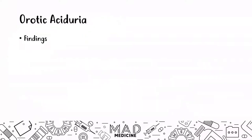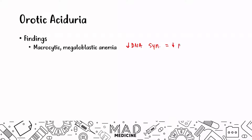When it comes to the findings, you're going to see macrocytic megaloblastic anemia. Why megaloblastic? Because you have decreased DNA synthesis, and that is because you have decreased pyrimidines. If you don't have enough pyrimidines, you cannot have DNA synthesis, and hence you're going to see megaloblastic anemia in this case.